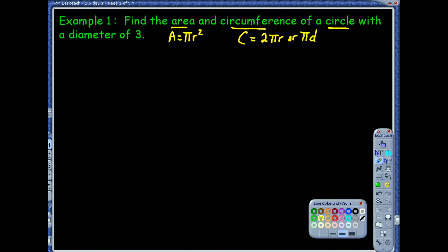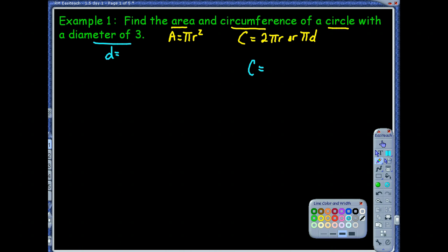The question is, which one do you use? It just depends on what they give you. If you read on, they give you the diameter. So I'd probably use the pi diameter formula. So, which one do you want to find first? Let's do circumference since we just talked about that formula — pi diameter. If we know the diameter is 3, how would I write that? I would write that as 3 pi.